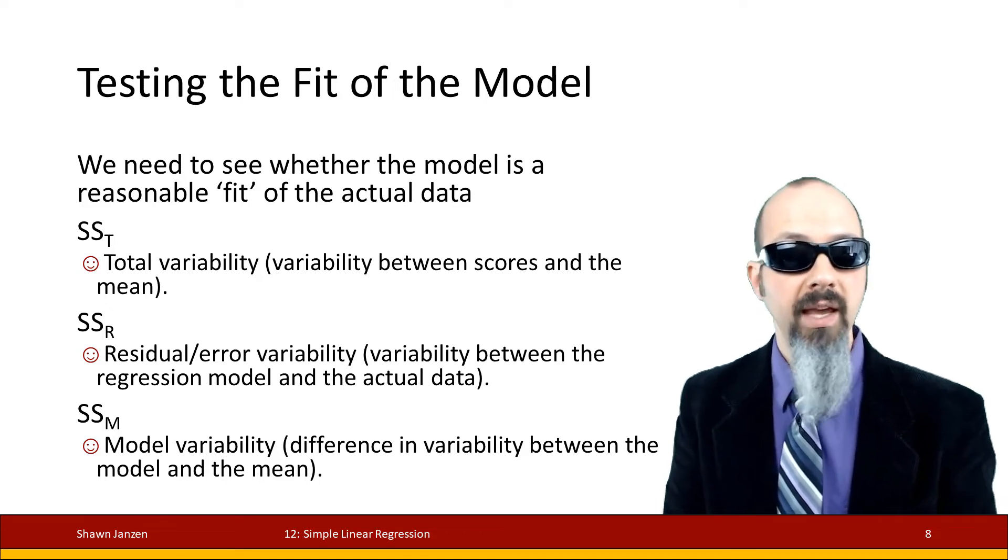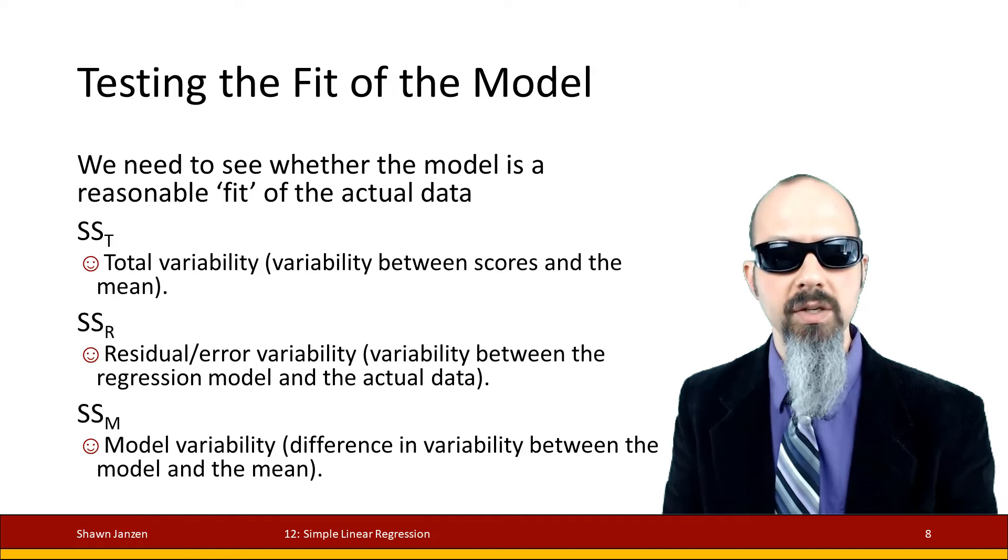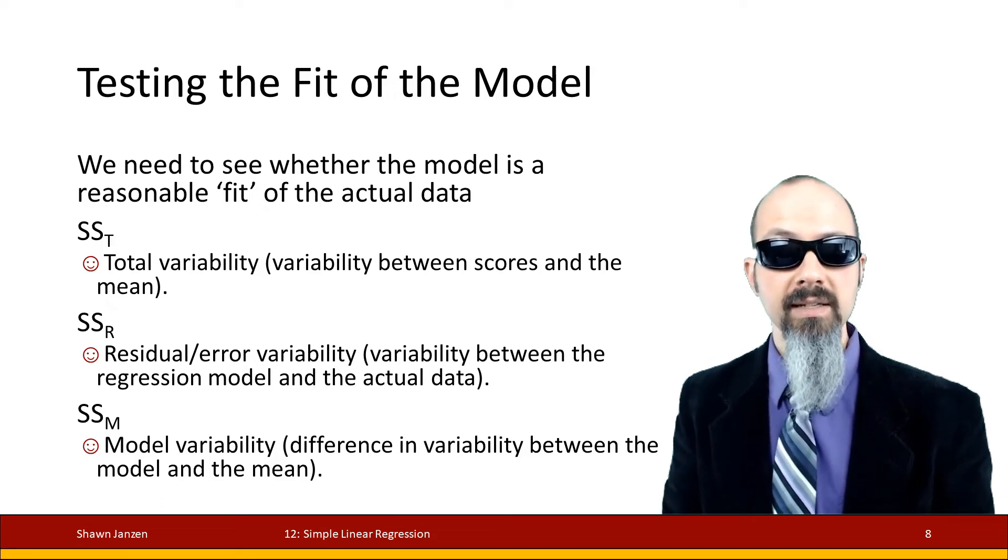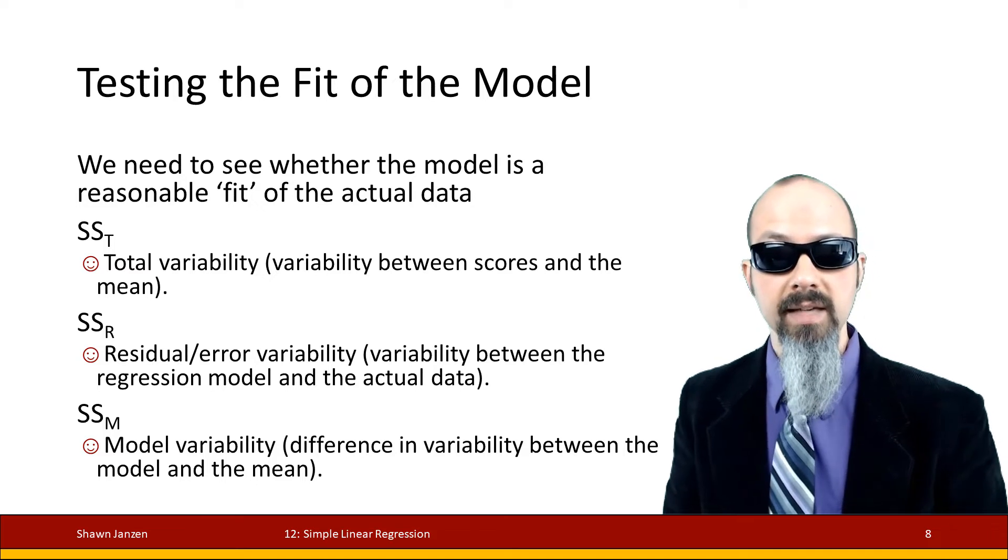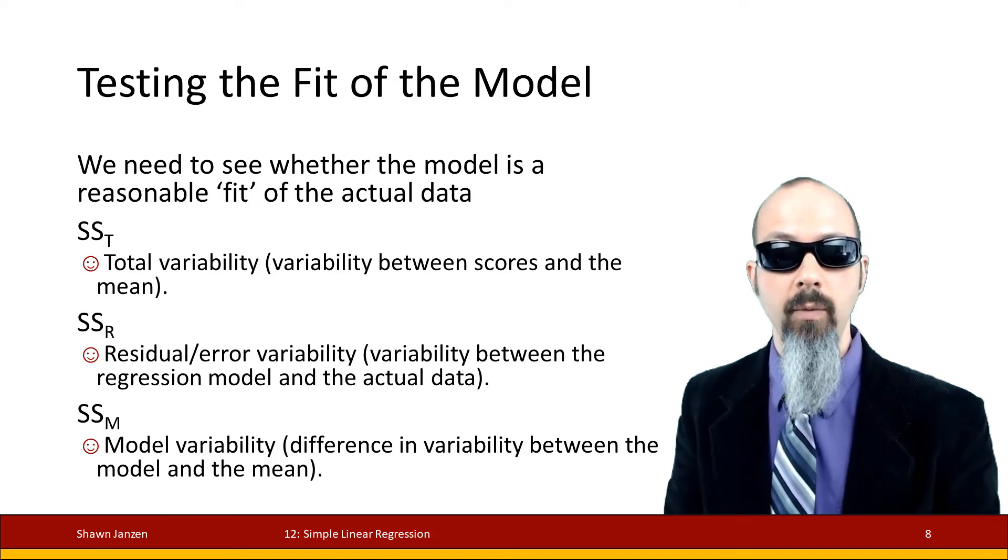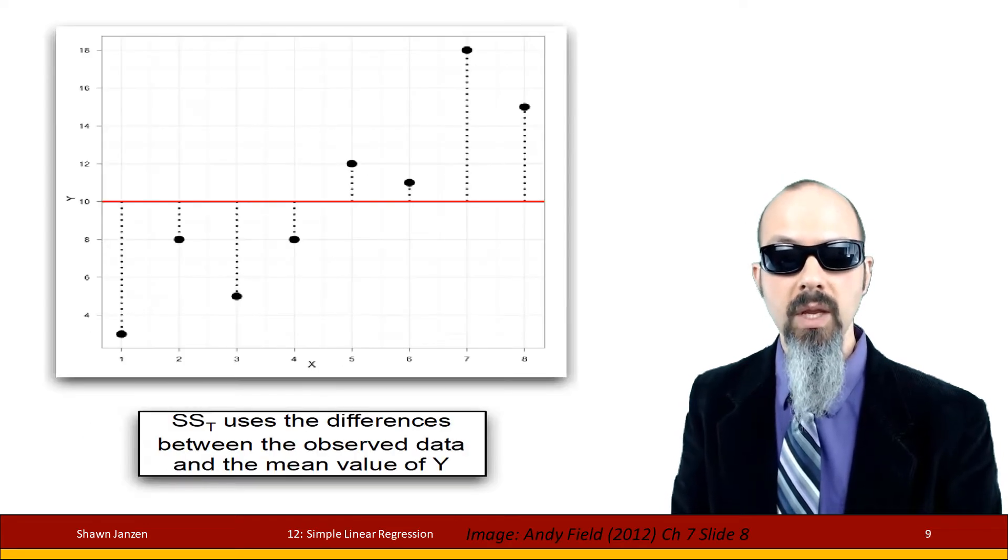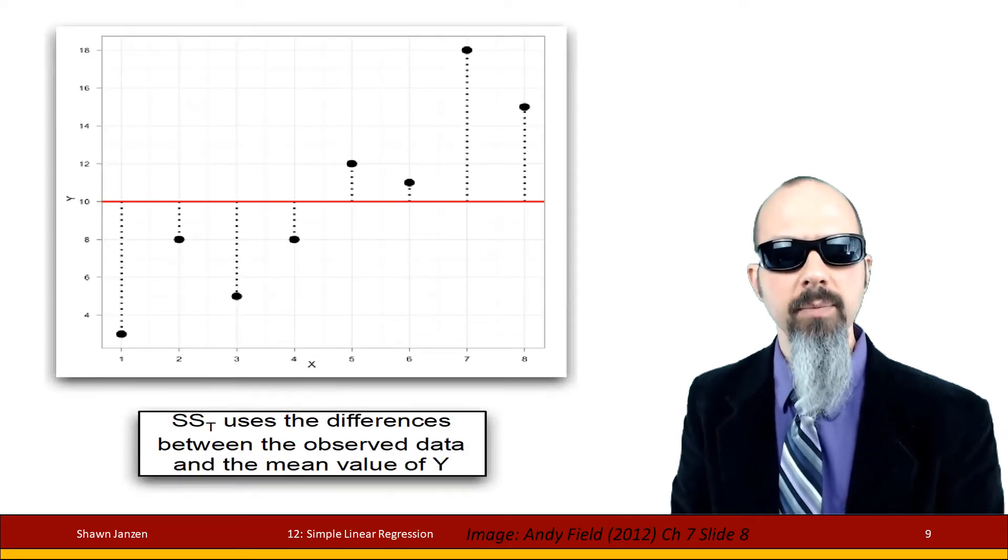We have sum of squares total (SST), which is the total variability—all the possible variation that could exist in your model. The SSR is the sums of squares residual—the amount of variability for the stuff we can't explain, the noise, the residuals, the errors. SSM is the variability of the model—how much variability is there from what we can explain to the mean points themselves.